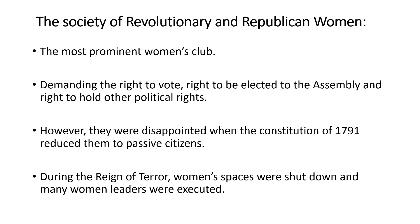However, French women were disappointed when the constitution of 1791 under the National Assembly reduced them to passive citizens. During the Reign of Terror, women's spaces were shut down. The Jacobin government issued laws ordering the closure of women's clubs and banning their political activities. Many prominent women were arrested and a number of them were executed on the charge of treason.